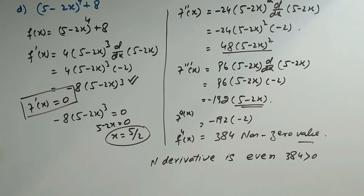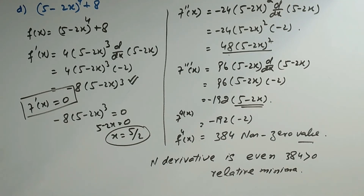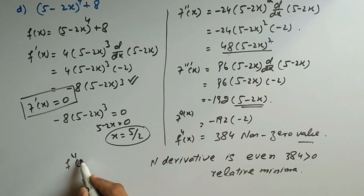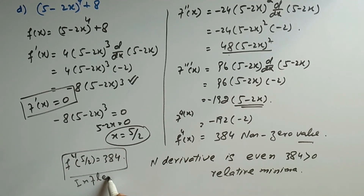Since the nth derivative that is non-zero is the fourth derivative (n = 4, which is even) and 384 > 0, we conclude that x = 5/2 is a relative minima. The stationary value f(5/2) = 384 at the fourth derivative confirms this. This completes question two.